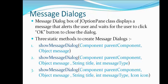In order to create a message dialog, JOptionPane class has three static overloaded methods named showMessageDialog. The first method takes two parameters: a component and an object. The second static method takes four parameters: a component, an object, a string, and an integer value. The third showMessageDialog takes a component, an object, a string, an int, and an icon.